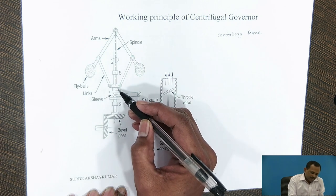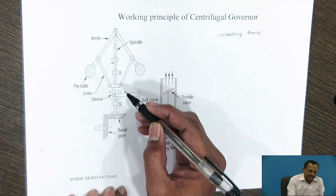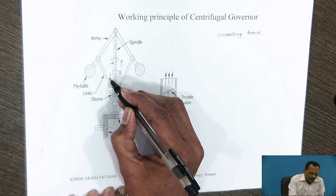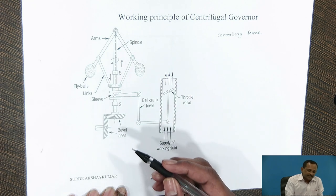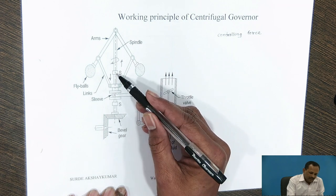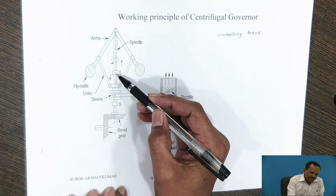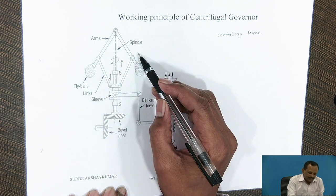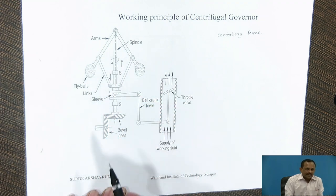When the speed of the engine increases, the sleeve will slide in the upward direction, and when the speed decreases, the sleeve will move in the downward direction. In order to limit the travel of the sleeve, two stoppers SS are provided on the spindle. As the speed of the engine increases, the arms of the governor move in the outward direction, and when the speed decreases, the arms of the governor will move in the inward direction.